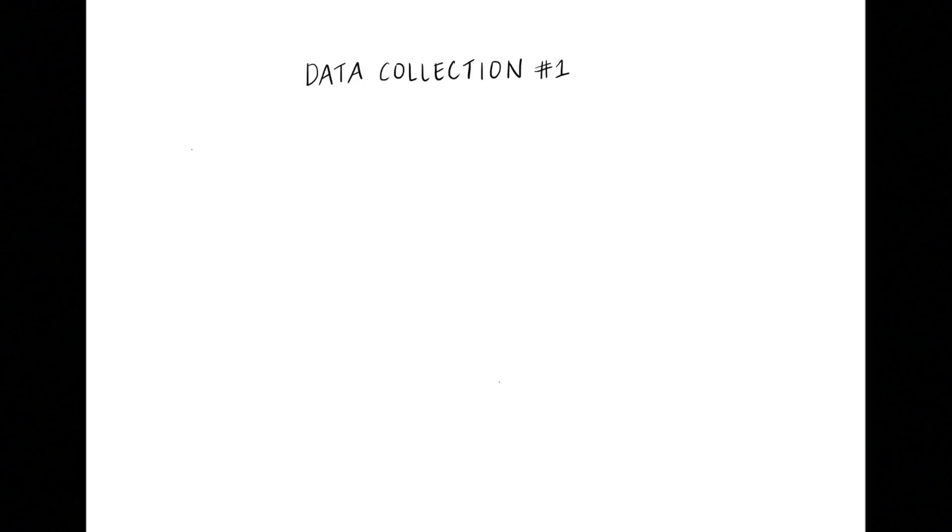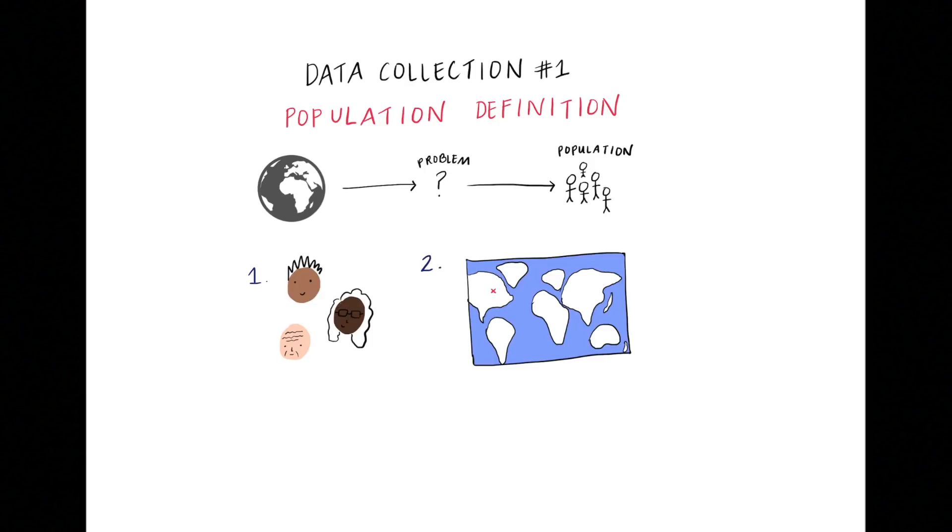To collect data, the first thing you'll need to do is define a population. Assuming the data set you are collecting is about people, you'll need to ask a lot of questions here. Who are you collecting data from or about? What parts of the world do they represent and how similar or different are they? How many people are you going to consider? This matters because your model will try to pick up patterns from the data and if your population isn't representative, it could end up performing poorly for some people when you actually deploy it.